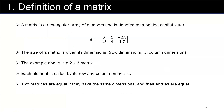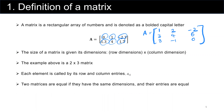A matrix is a rectangular array of numbers and is denoted as a bolded capital letter. For example, matrix A has these elements and is represented using this notation. The size of a matrix is given by its dimensions — row dimensions multiplied by column dimensions. For example, matrix A equals [1, 2, -2; 3, 4, 6; 8, -1, 0], so this matrix has 3 rows and 3 columns — a 3 by 3 matrix. Another matrix in the example has 2 rows and 3 columns, so it's a 2 by 3 matrix.